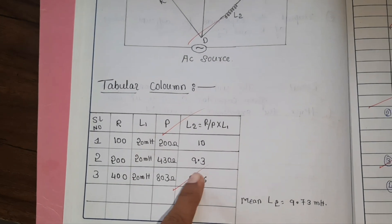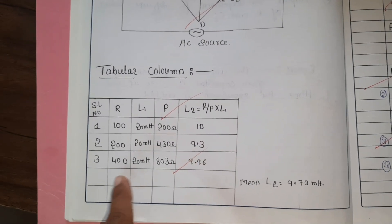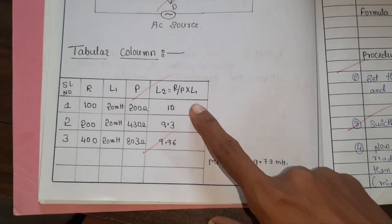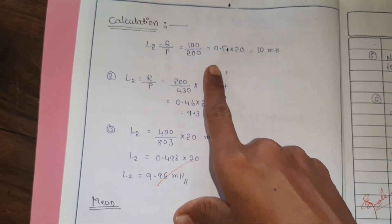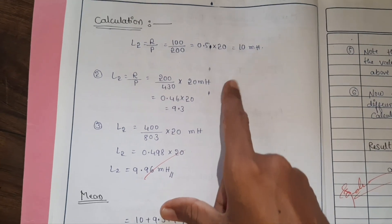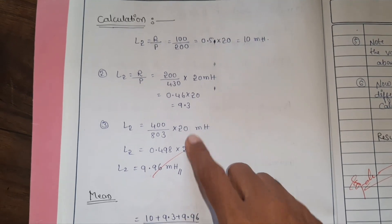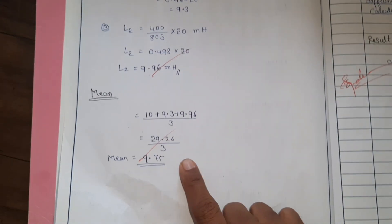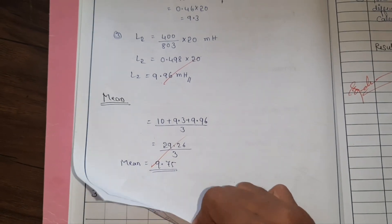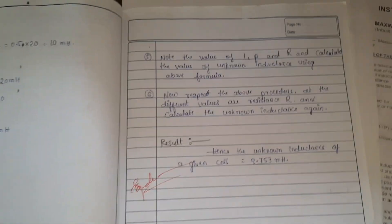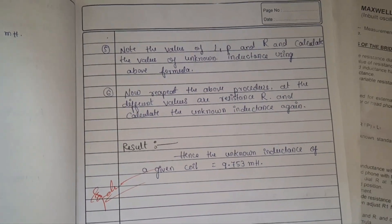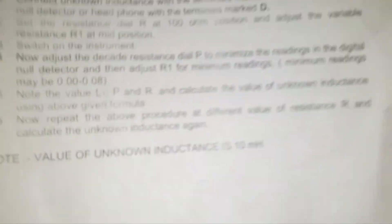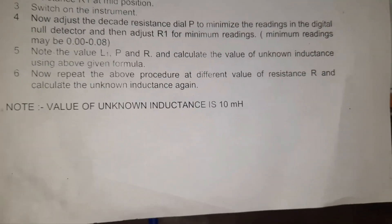For R = 200 they got 9.3 mH, for R = 400 they got 9.96 mH. Once you calculate all three values, take the average. The calculations give L2 approximately 10 millihenry — values of 9.3 and 9.9 — and the average is 9.75 millihenry. The result: the unknown inductance of the given coil is approximately 9.6 to 9.7 millihenry.